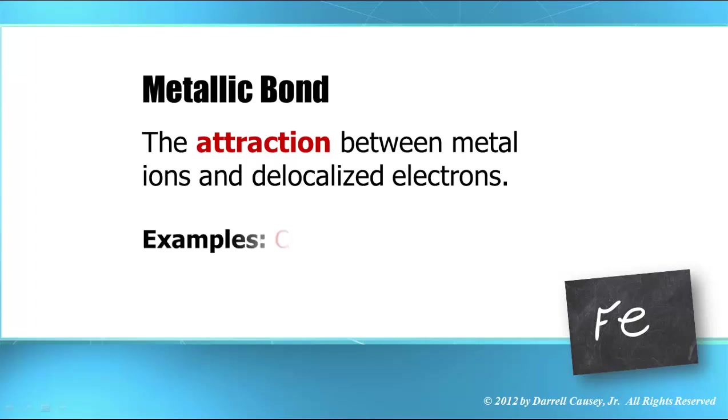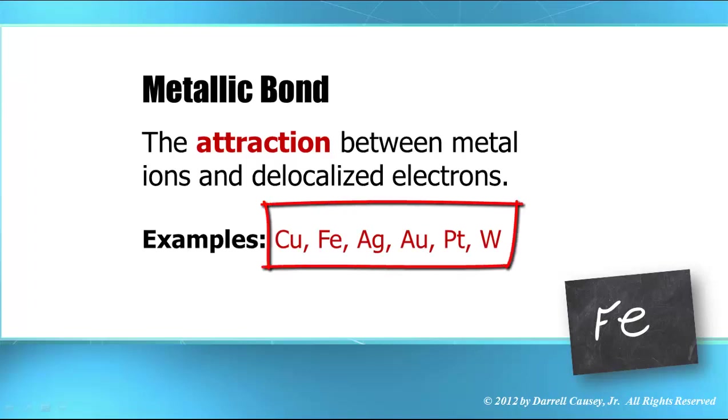Well, if you take copper, iron, silver, gold, platinum, tungsten, and many other different types of metals, you're able to take them and hammer them or make them into wire. That is, they are malleable and ductile. Well, that's because of the metallic bond.